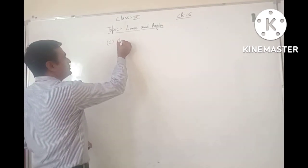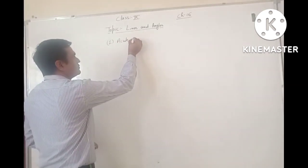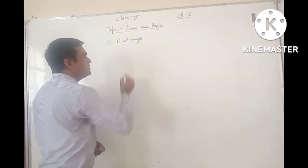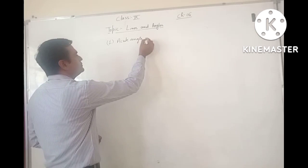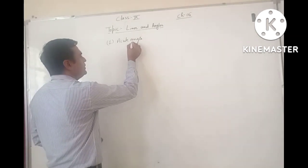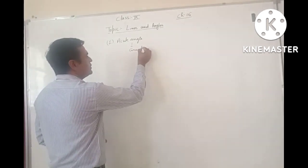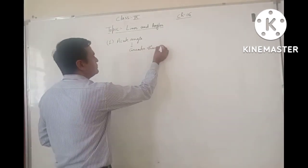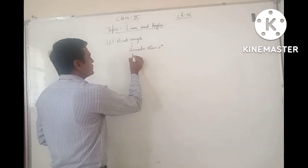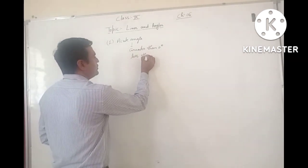First is Acute Angle. Acute Angles are those angles whose measure is greater than 0 degree but less than 90 degree.